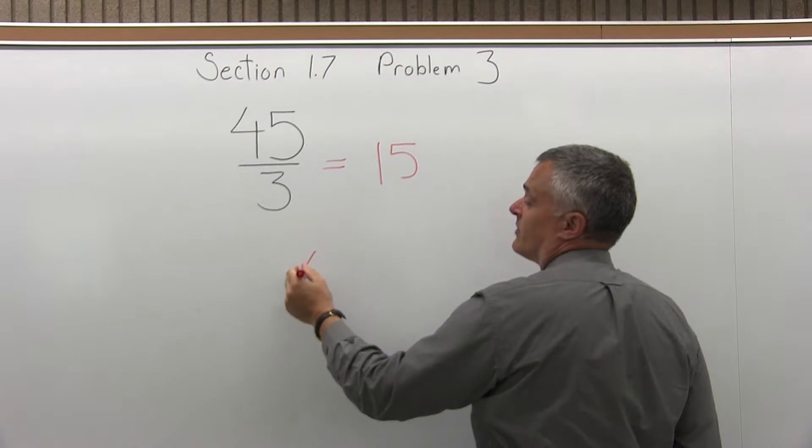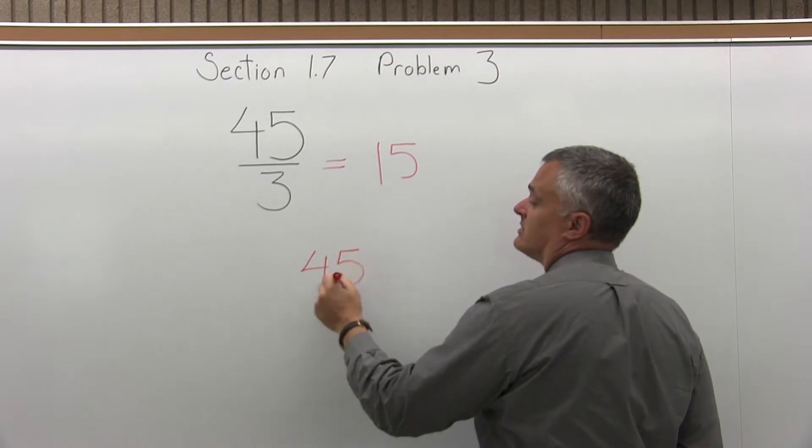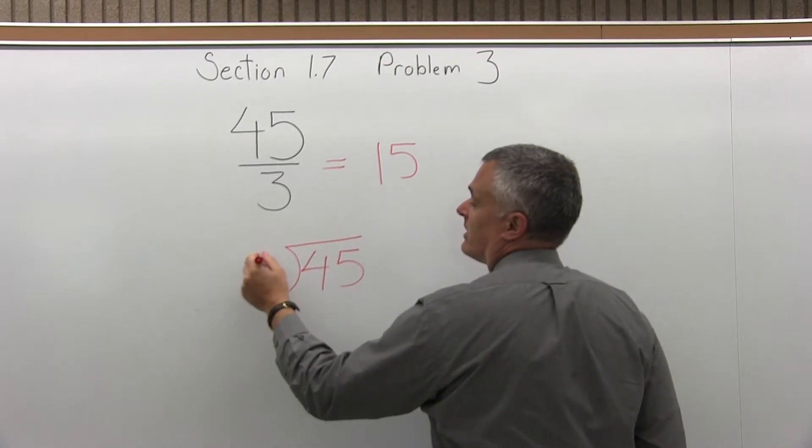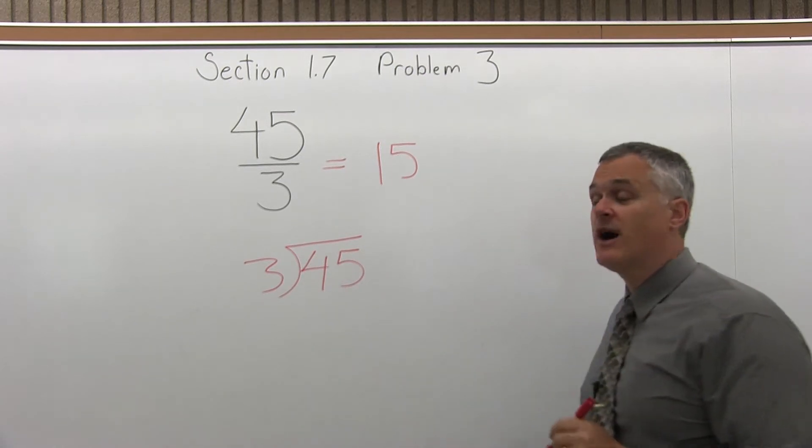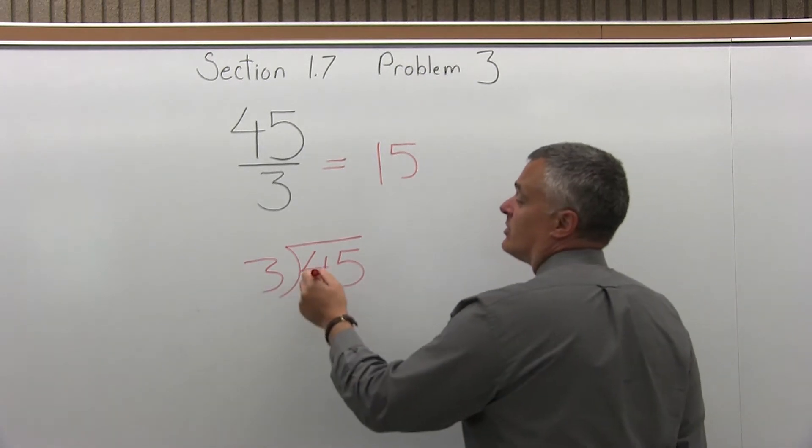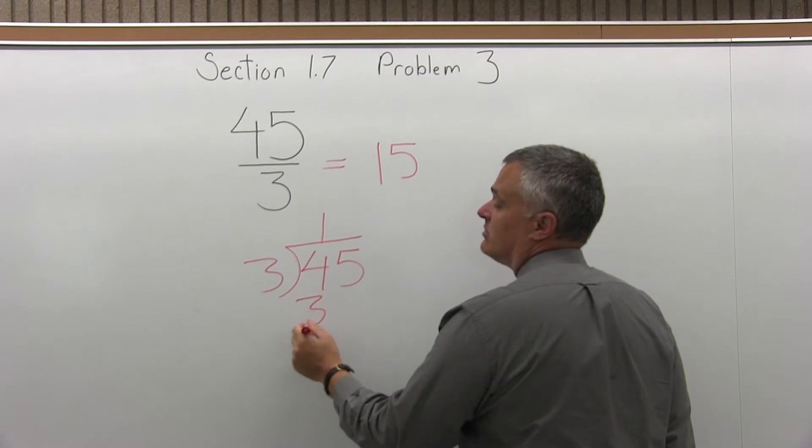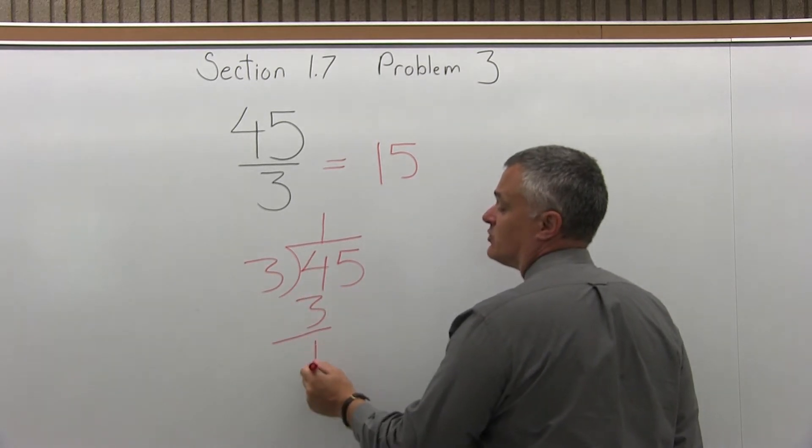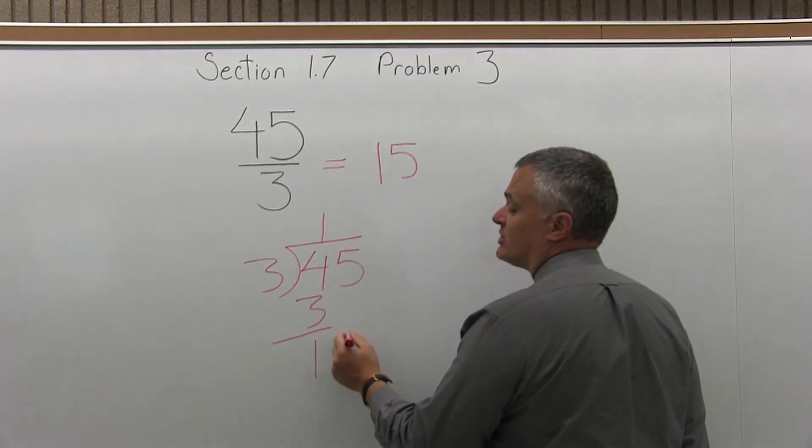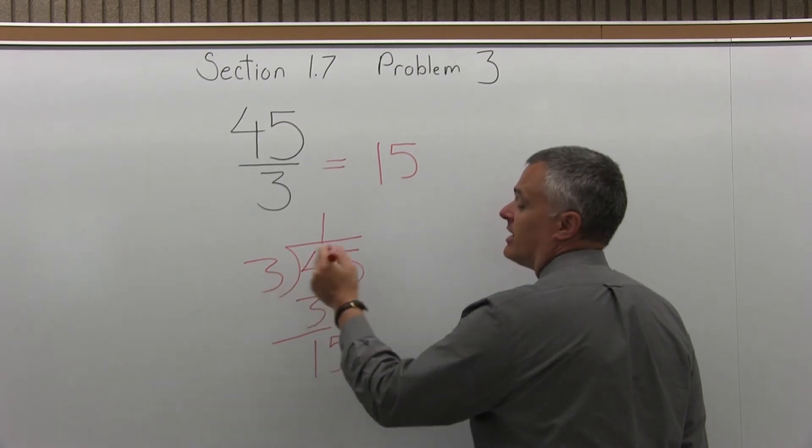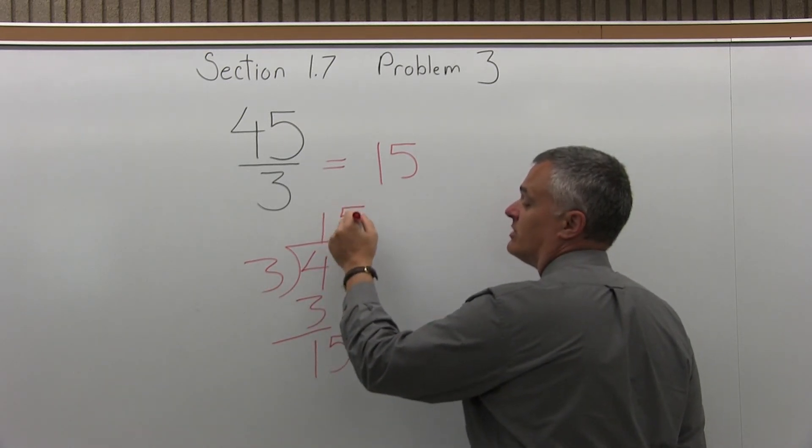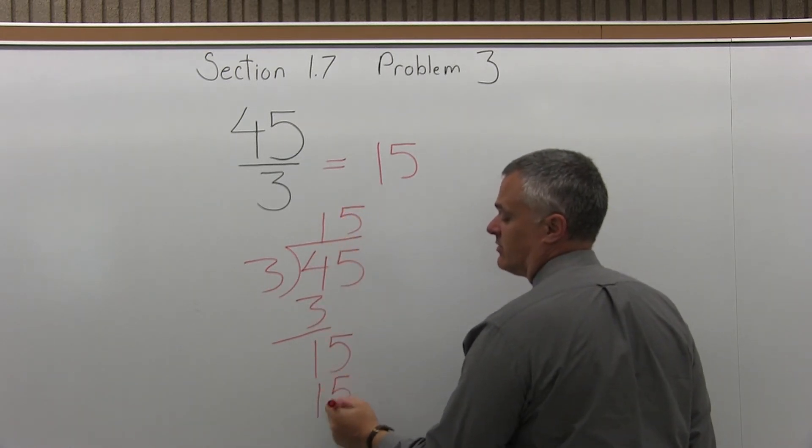Now if you don't see it evenly, what you would do is figure out how many times 3 goes into the 45. So 3 will go into 4 once. 1 times 3 is 3. You subtract. 4 minus 3 is 1. Bring down the next digit, which is a 5. 3 times something is 15. 3 times 5, and then it goes in evenly without a remainder.